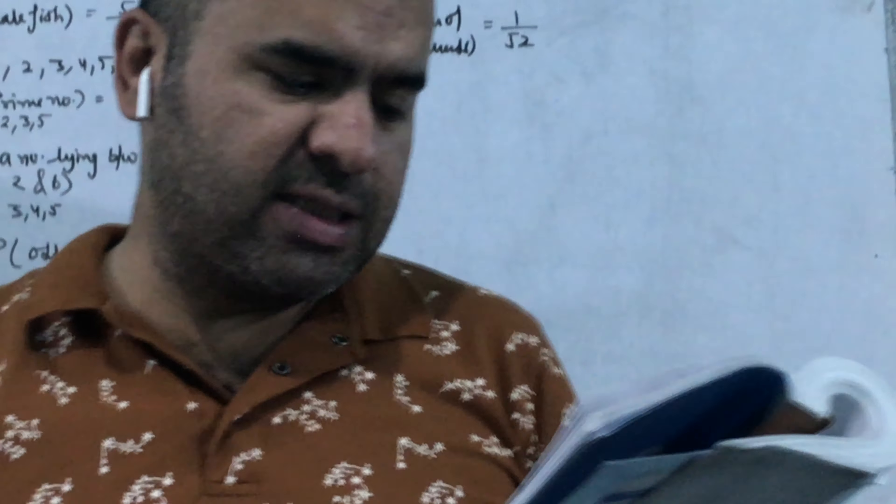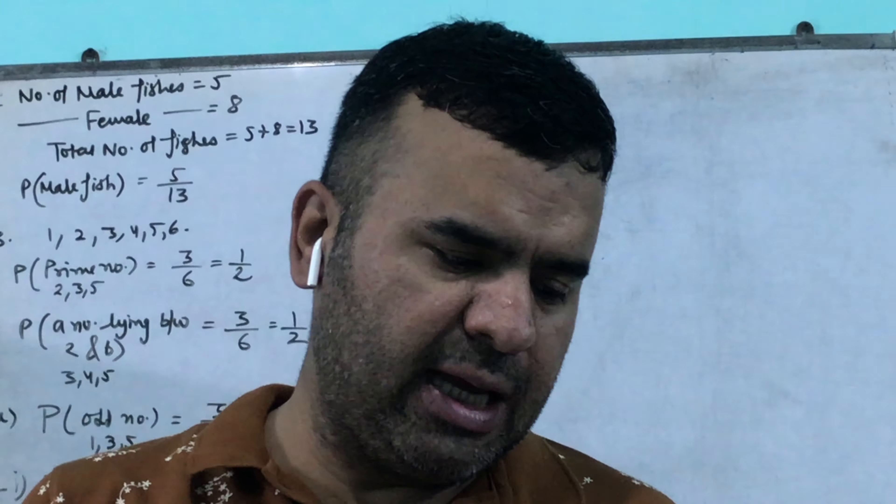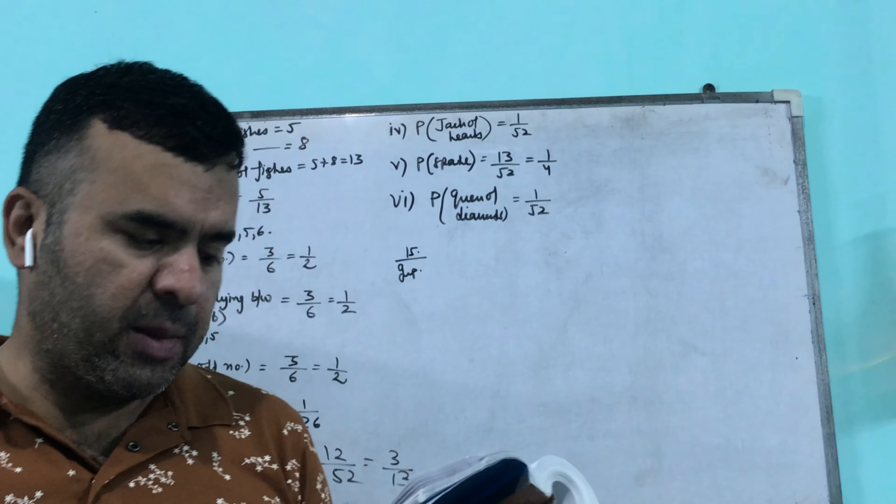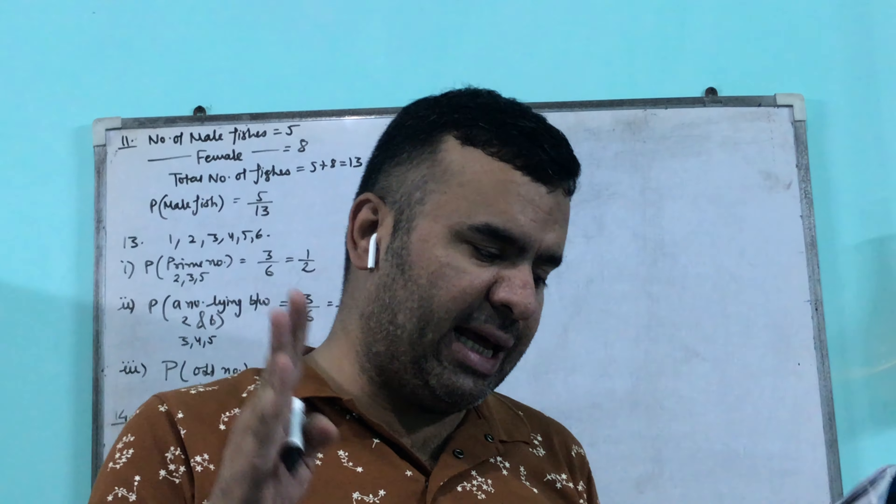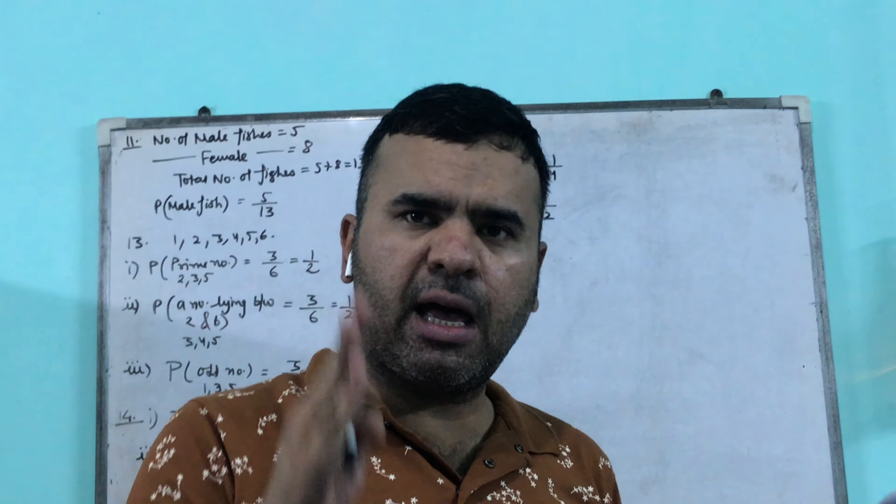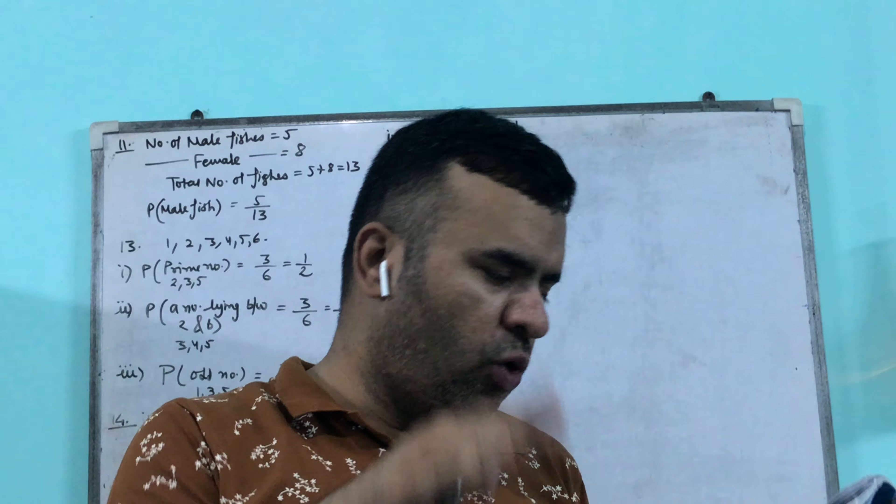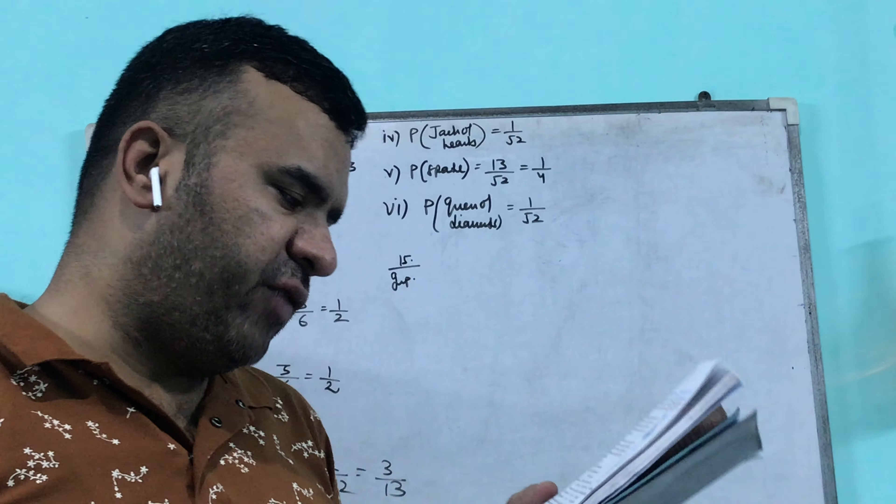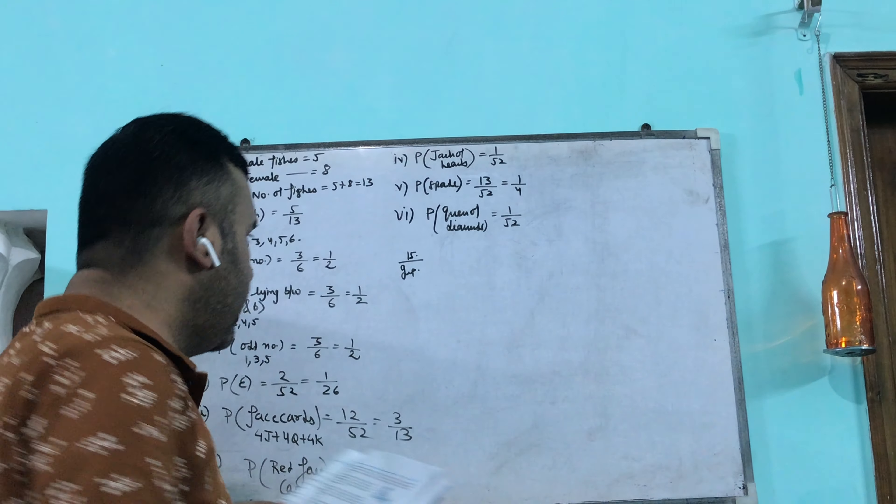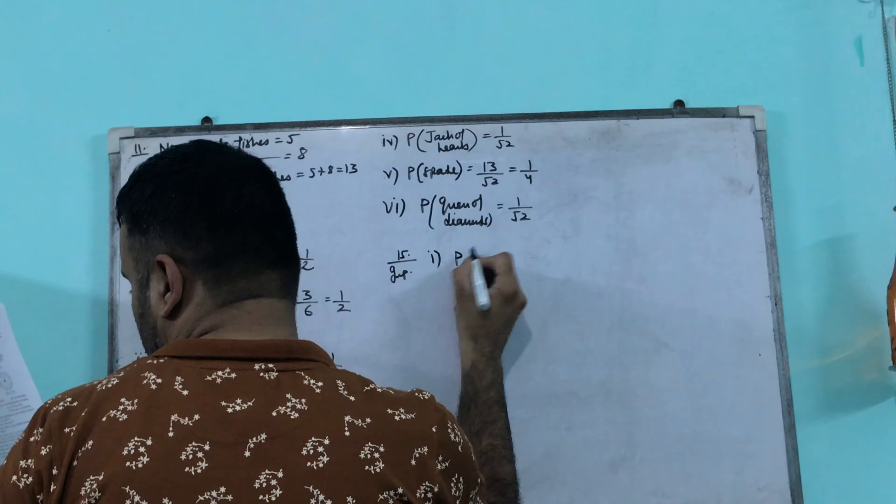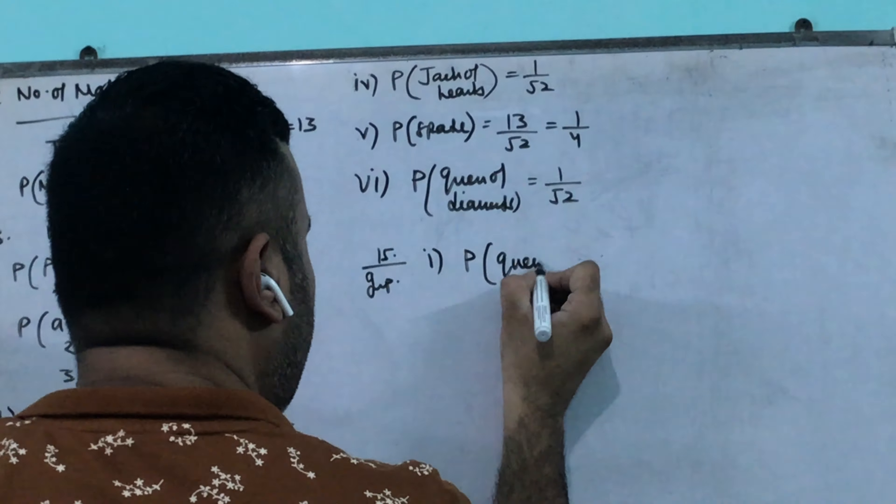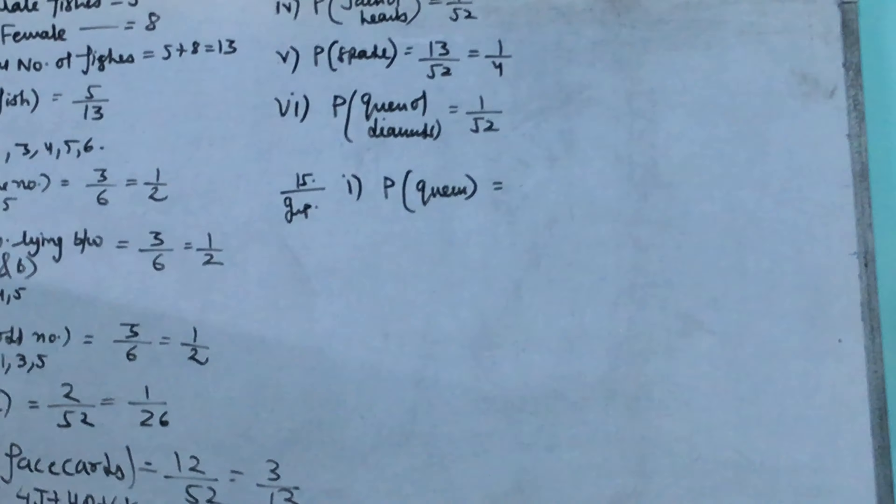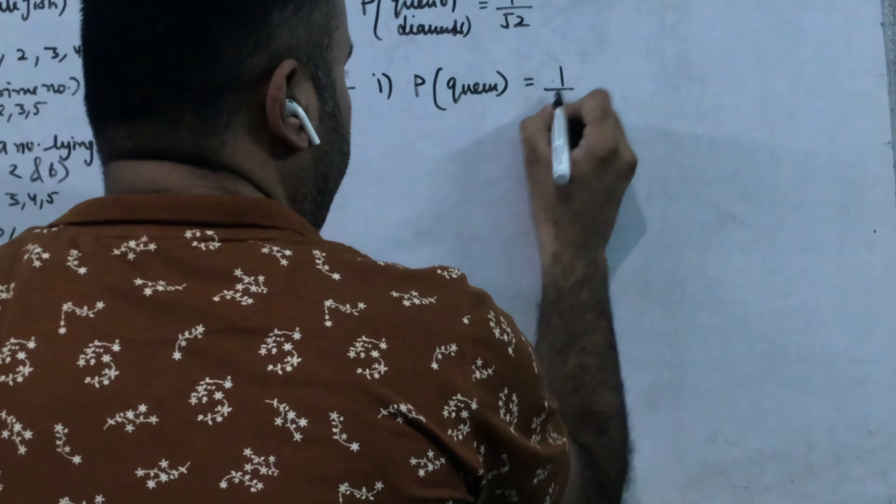15th question says 5 cards - the 10, jack, queen, king and ace of diamonds are well shuffled with their face downward. Now there is a card from them. So tell us what is the probability that the card in hand is queen? How much is the queen in the 5 cards? Don't look at it, only 5 cards. One by five.